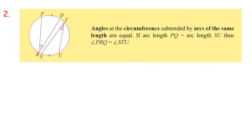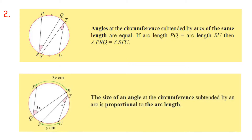If arc length PQ equals arc length SU, then Angle PRQ equals Angle STU. The size of an angle at the circumference subtended by an arc is proportional to the arc length.